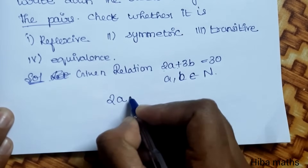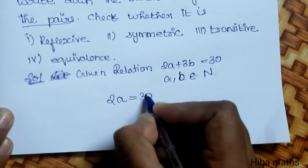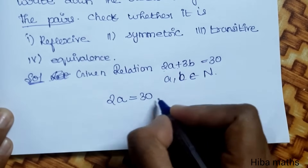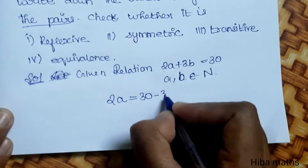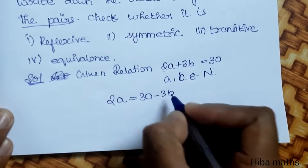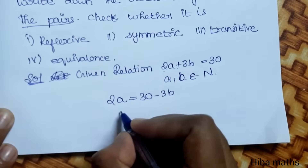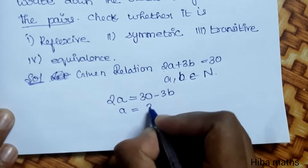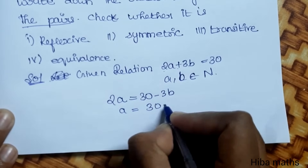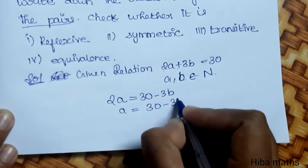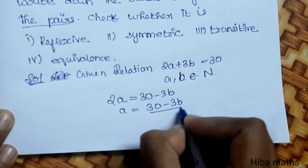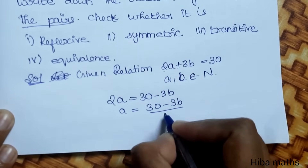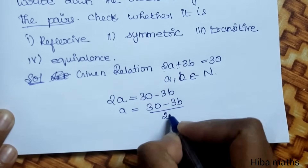From 2a plus 3b equals 30, we get 2a equals 30 minus 3b, therefore a equals (30 minus 3b) divided by 2.